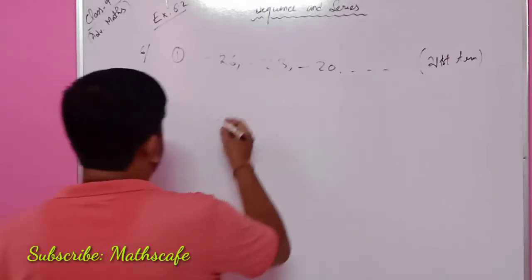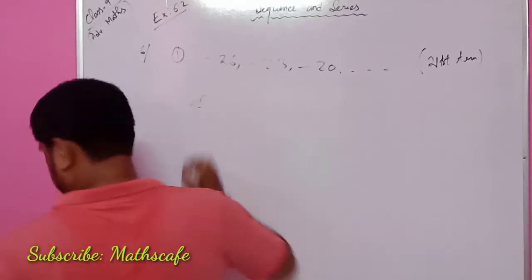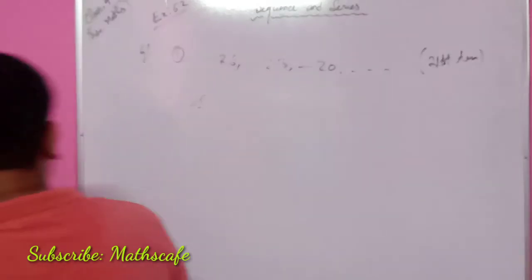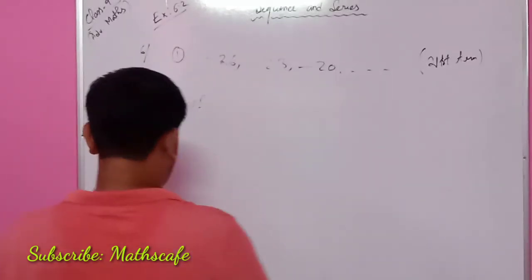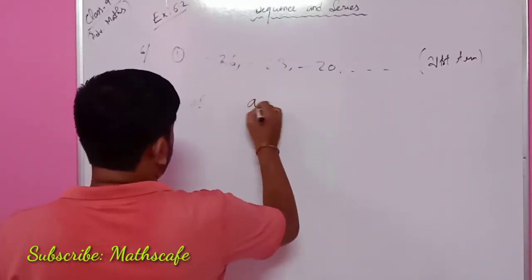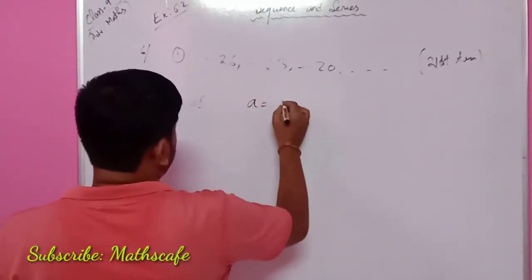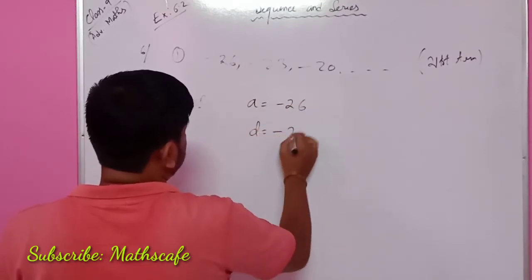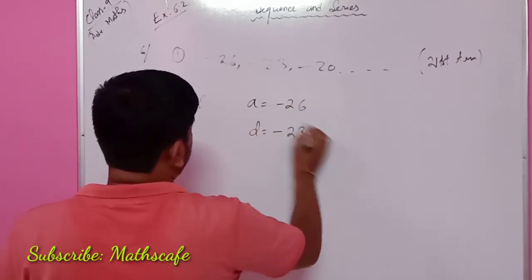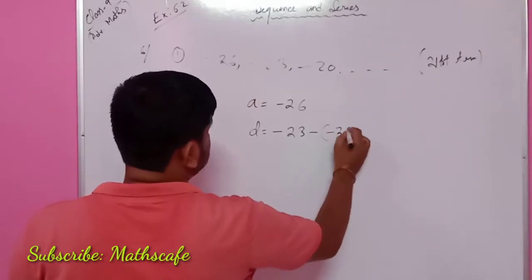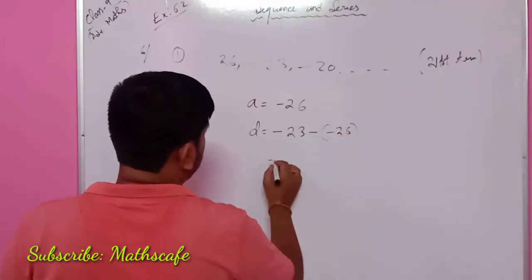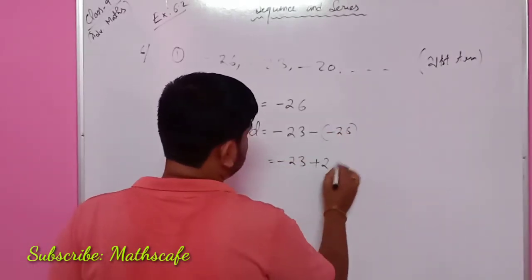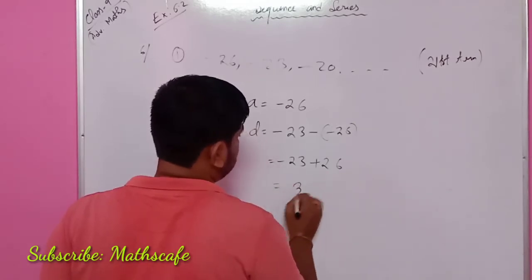This is the solution. This is the first term. A equals minus 26. The common difference is the second term minus the first term.